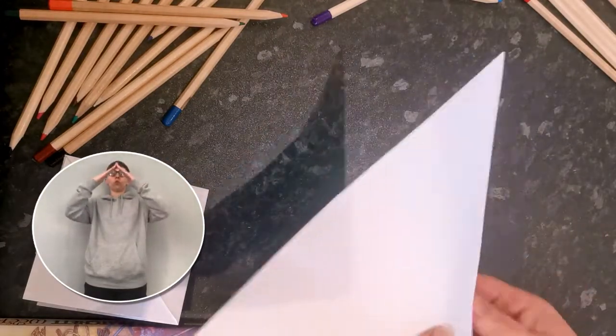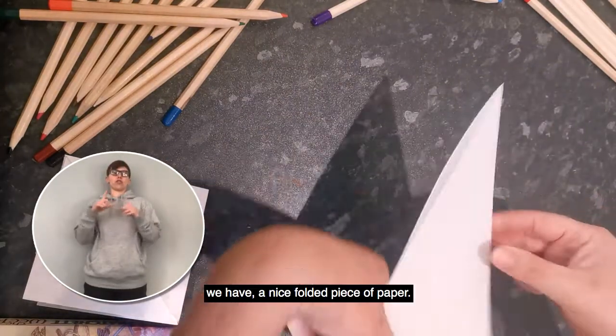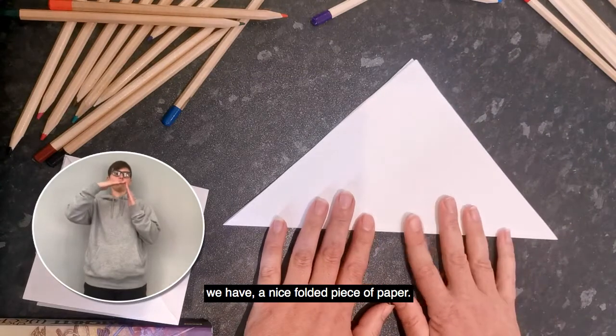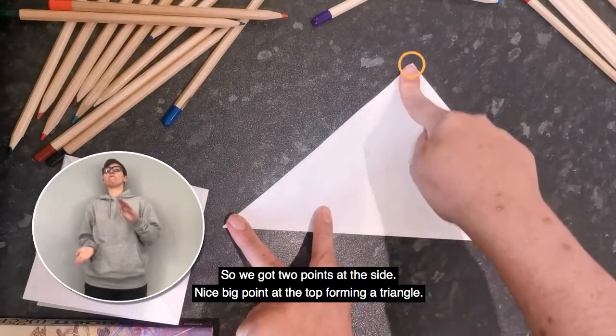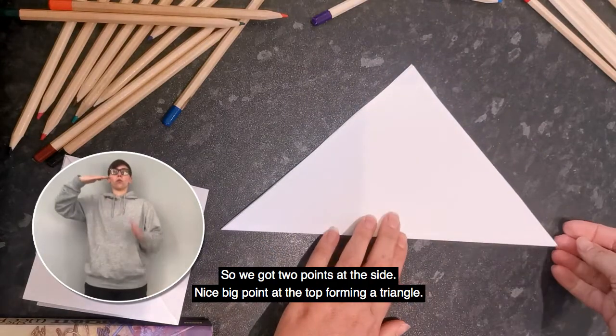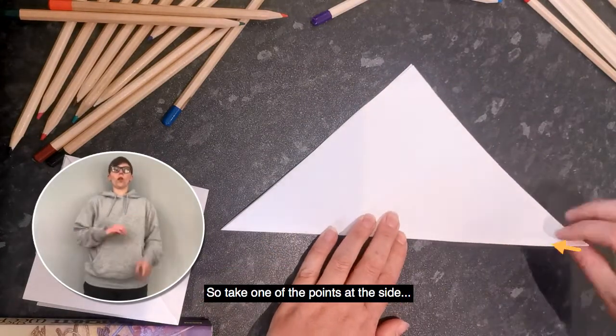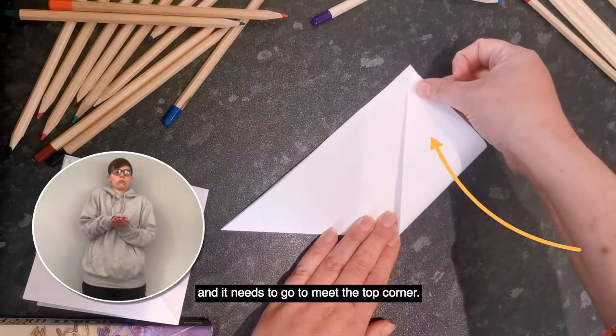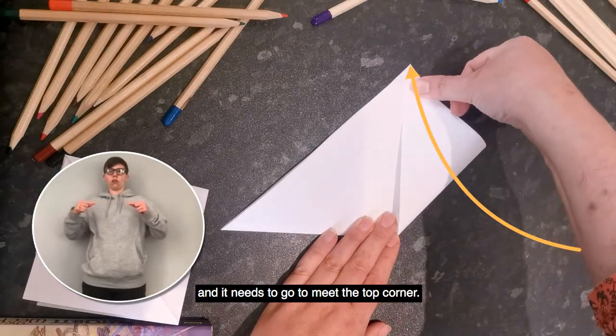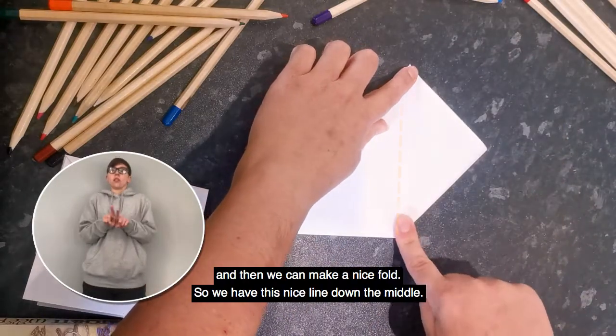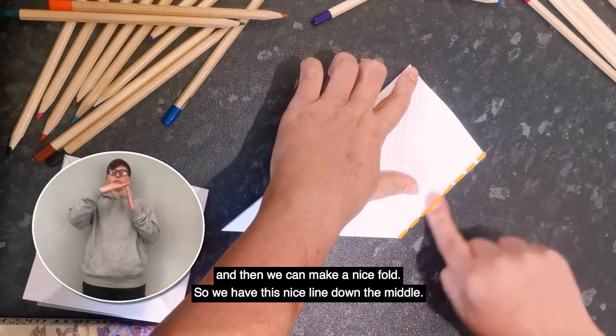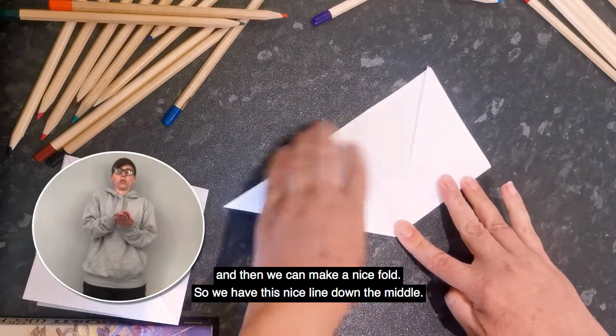There we go. So now we have a nice folded piece of paper. We've got two points at the side, a nice big point at the top forming a triangle. Take one of the points at the side and it needs to go to meet the top corner. And then we can make a nice fold, so we've got this nice line all the way down the middle.